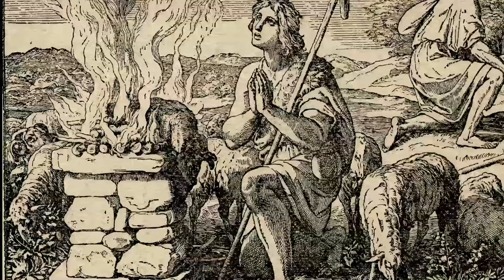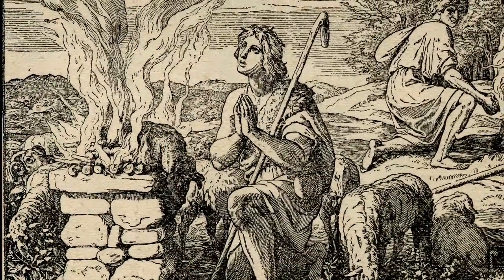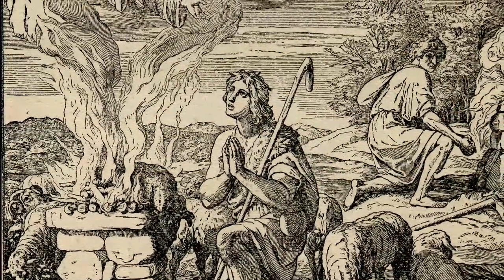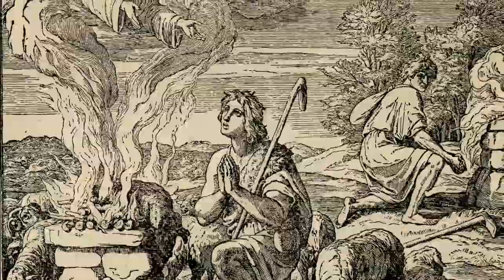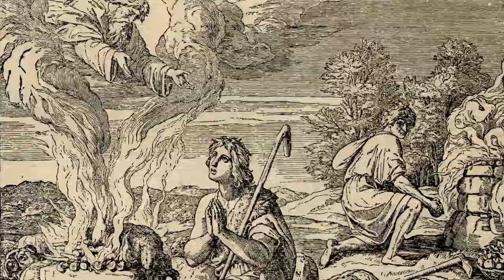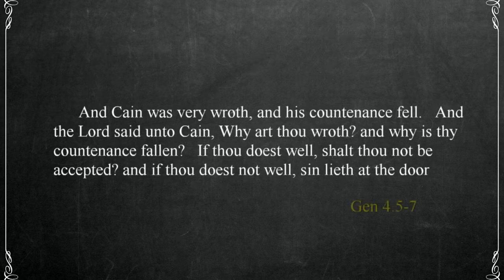Offerings were being made to God. Abel brought of his sheep as an offering to God, which was accepted in Genesis 4:4, while Cain presented an offering of his harvest in Genesis 4:3, which was not accepted by the Lord. This angered Cain, and God spoke to him. The Lord said unto Cain, 'Why art thou wroth and why is thy countenance fallen? If thou doest well shalt thou not be accepted, and if thou doest not well sin lieth at the door' in Genesis 4:5 through 7.